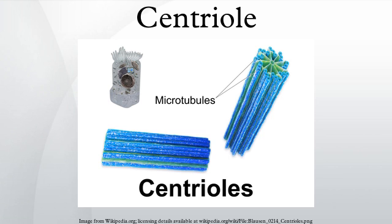Regarding cell division, centrioles are involved in the organization of the mitotic spindle and in the completion of cytokinesis. Centrioles were previously thought to be required for the formation of a mitotic spindle in animal cells. However, more recent experiments have demonstrated that cells whose centrioles have been removed by laser ablation can still progress through the G1 stage of interphase before centrioles can be synthesized later in a de novo fashion. Additionally, mutant flies lacking centrioles develop normally, although the adult flies' cells lack flagella and cilia and as a result, they die shortly after birth.